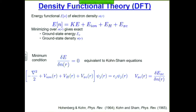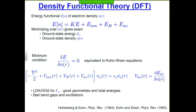Every single term in this energy, except the last one, is completely well-determined. The last one is the part that's hard — it's about electrons interacting with each other, pushing each other out of the way, and some quantum mechanical effects called exchange, as in Hartree-Fock exchange. These things are what we have to approximate, and we shuffled all our ignorance into the small term EXC. So you have to make an approximation to it.